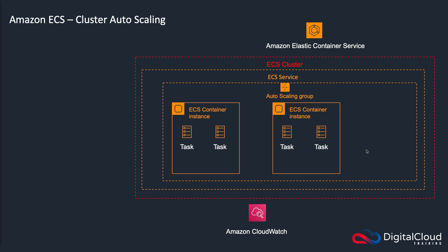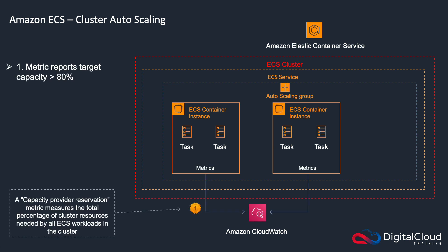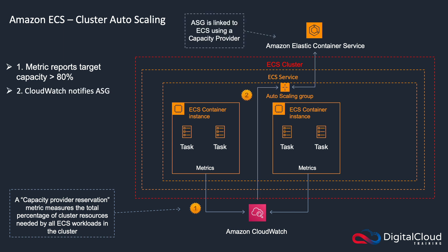That's where cluster auto scaling can help. With cluster auto scaling, a metric gets reported when the target capacity exceeds a certain value. This metric is different from what we looked at in the last lesson — it uses what's called a capacity provider reservation, which measures the total percentage of cluster resources needed by all ECS workloads in the cluster, regardless of whether they're in the same ECS service, in a different service, or just running manually.